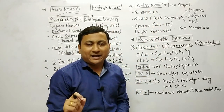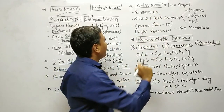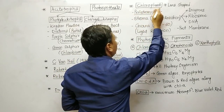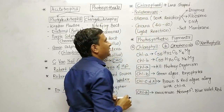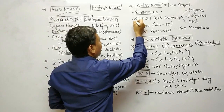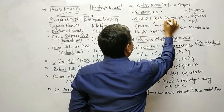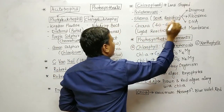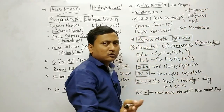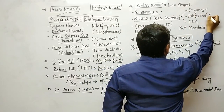Chloroplast shape is lens-shaped. Chloroplast is a double membrane structure; these two membranes are collectively called the peristromium. Peristromium encloses a clear, colorless matrix called the stroma. Stroma is where dark reactions generally occur.